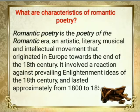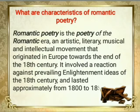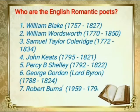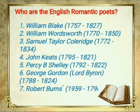What are the characteristics of Romantic poetry? Romantic poetry is poetry of the Romantic era — an artistic, literary, musical, and intellectual movement that originated in Europe towards the end of the 18th century. It involved a reaction against prevailing Enlightenment ideas and lasted approximately from 1800 to 1850. The English Romantic poets include William Blake, William Wordsworth, Samuel Taylor Coleridge, John Keats, Percy B. Shelley, George Gordon or Lord Byron, and Robert Burns.